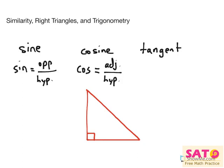The last one would be tangent, which we'll call tan, equals the opposite over the adjacent.